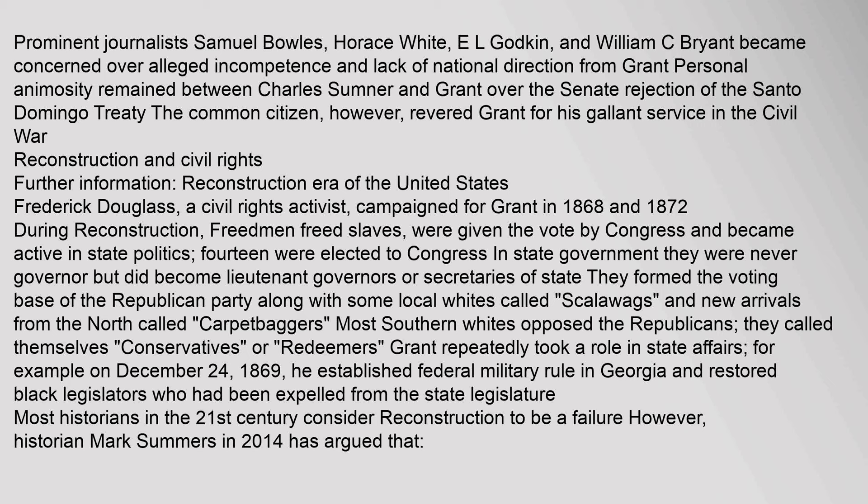During Reconstruction, freedmen — freed slaves — were given the vote by Congress and became active in state politics; fourteen were elected to Congress. They formed the voting base of the Republican Party along with local whites called 'scalawags' and new arrivals from the North called 'carpetbaggers.' Most southern whites opposed the Republicans, calling themselves 'conservatives' or 'redeemers.' Grant repeatedly took a role in state affairs — for example on December 24, 1869, he established federal military rule in Georgia and restored black legislators who had been expelled from the state legislature.